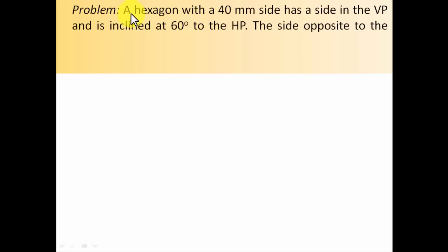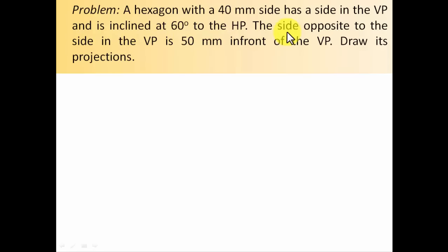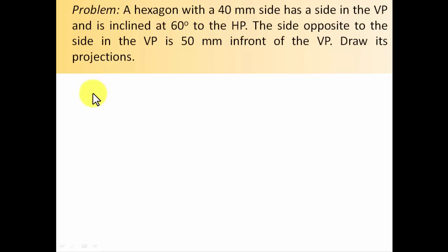A hexagon with a 40mm side has a side in the VP and is inclined at 60 degrees to the HP. The side opposite to the side in the VP is 50mm in front of the VP. Let's go ahead and draw its projections.